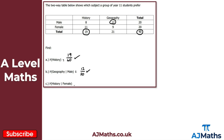For part C, we're looking for the probability that a randomly selected student studies history given that they are female. Again we restrict the sample space to the 20 female students, so the denominator is 20. Out of those 20 female students, 11 study history, giving us 11 over 20. That's the solution to part C, completing question one, and that brings us to the end of this video on conditional probability.